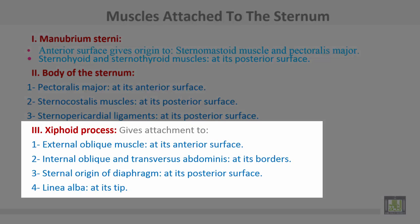The xiphoid process gives attachment to the following muscles: the external oblique at its anterior surface, the internal oblique and transversus abdominis at its borders, the external origin of the diaphragm at its posterior surface, and the linea alba at the tip of the xiphoid process.